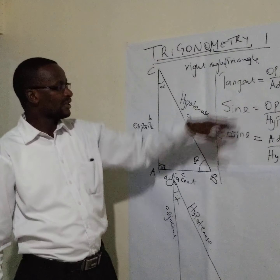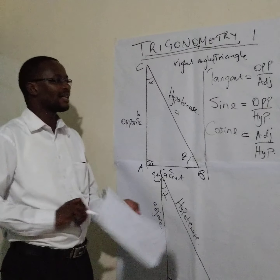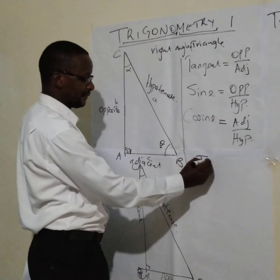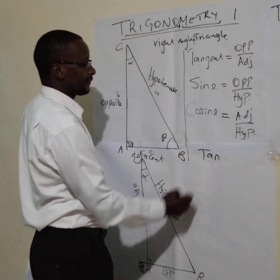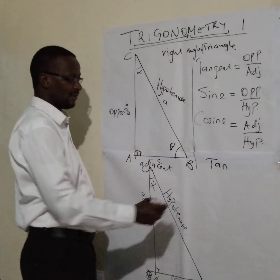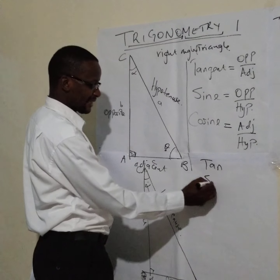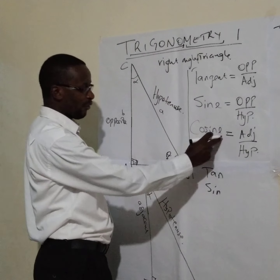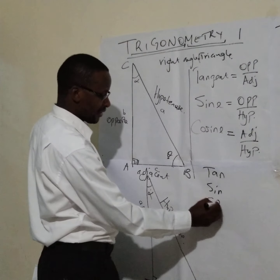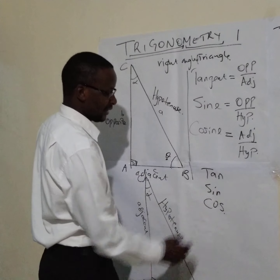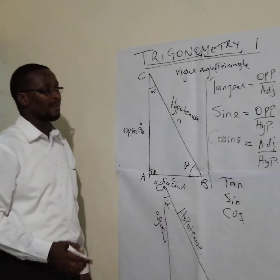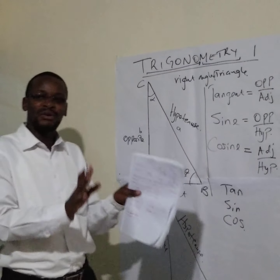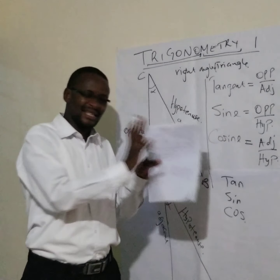We don't use the full words. So instead of tangent, we write 'tan'. Instead of sine, we write 'sin'. And instead of cosine, we write 'cos'. It is good that you remember those ratios, and they are known as ratios just as they are.